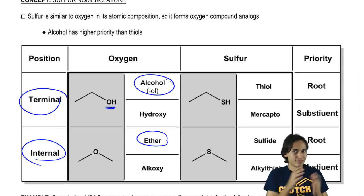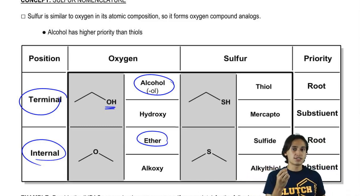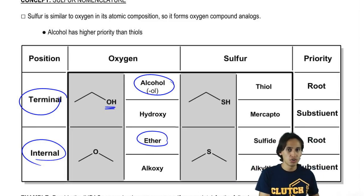But it turns out that sometimes these oxygens may not always get the highest priority. Sometimes oxygens are actually named as substituents. When alcohol is named as a substituent, that means that it actually has a higher priority group other than the alcohol present.